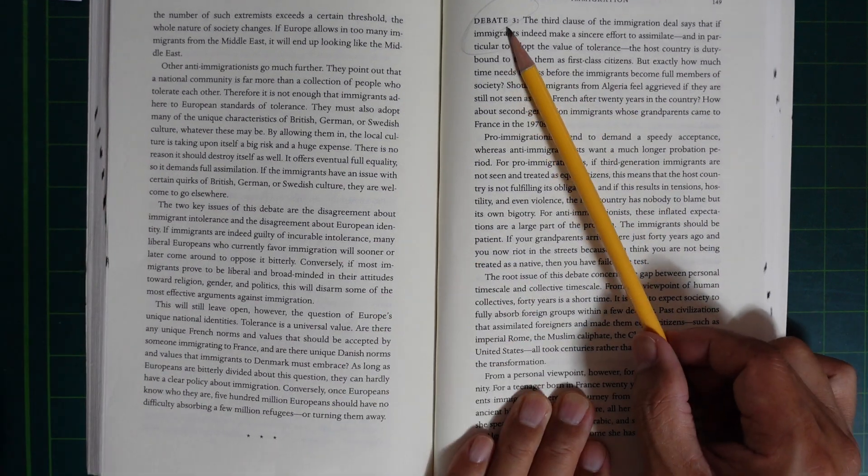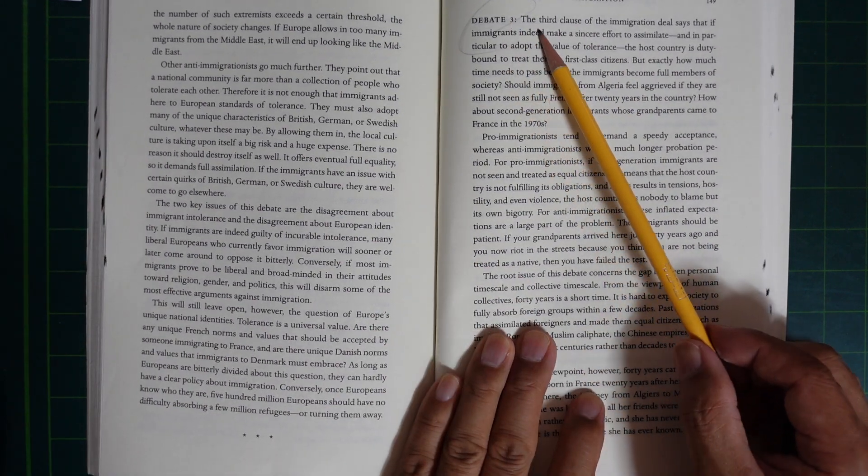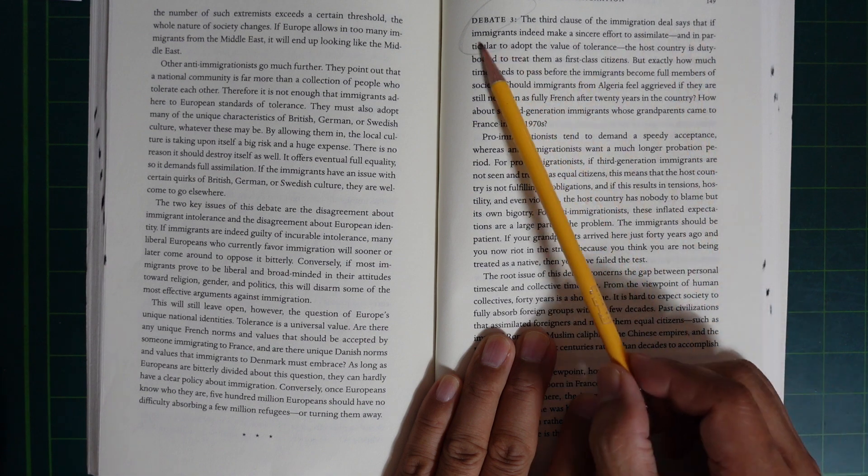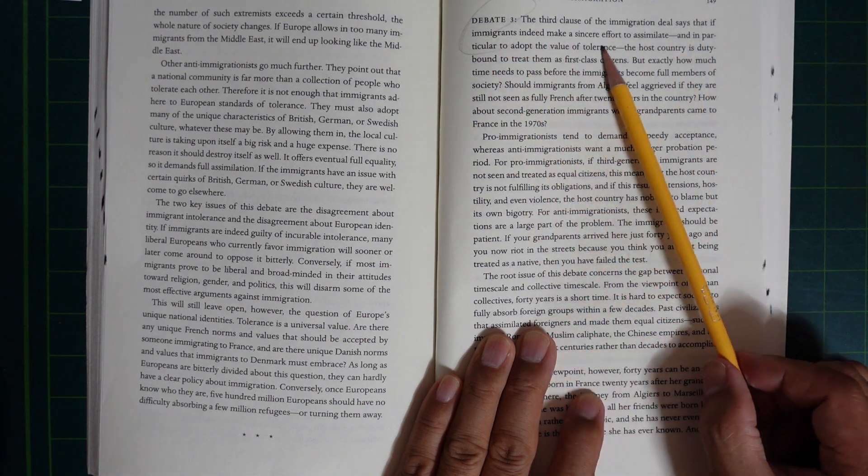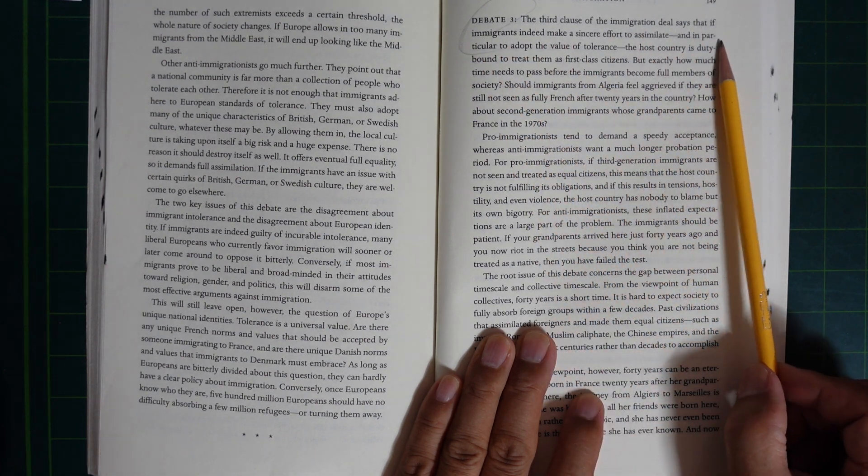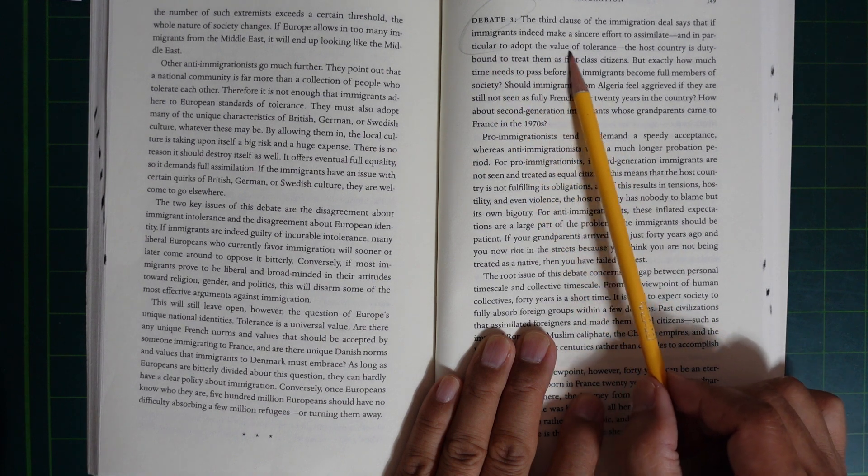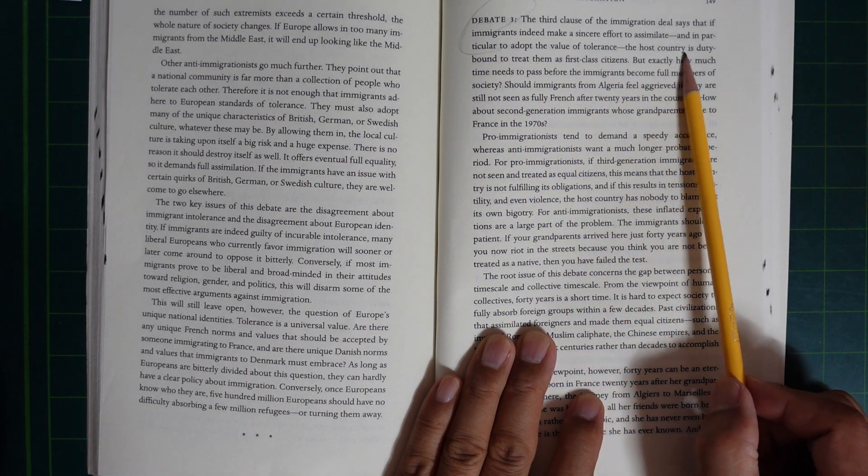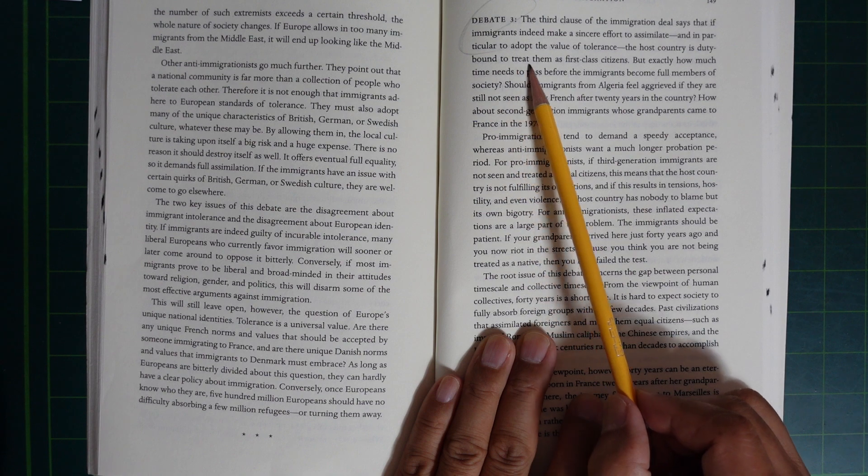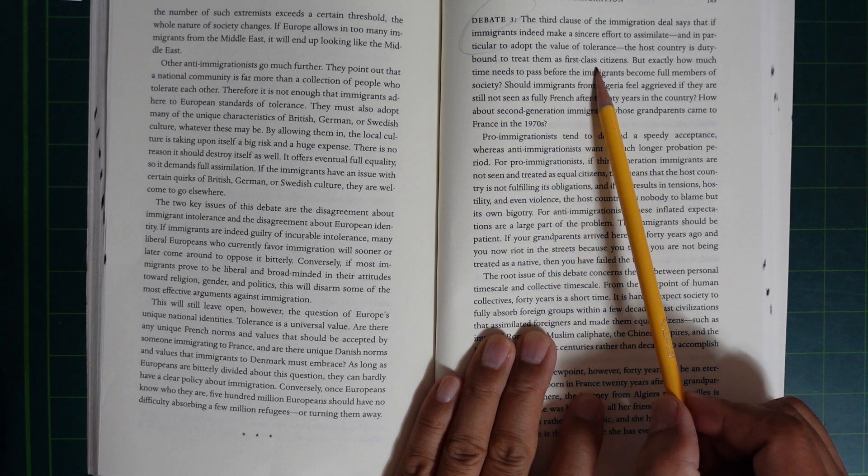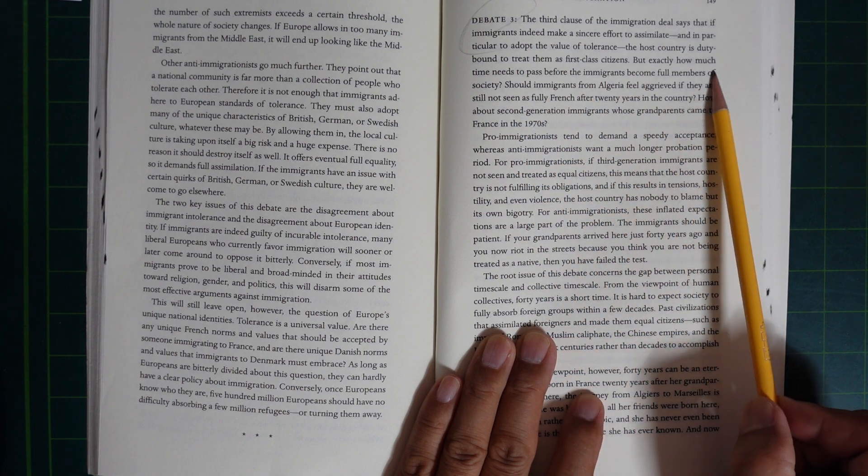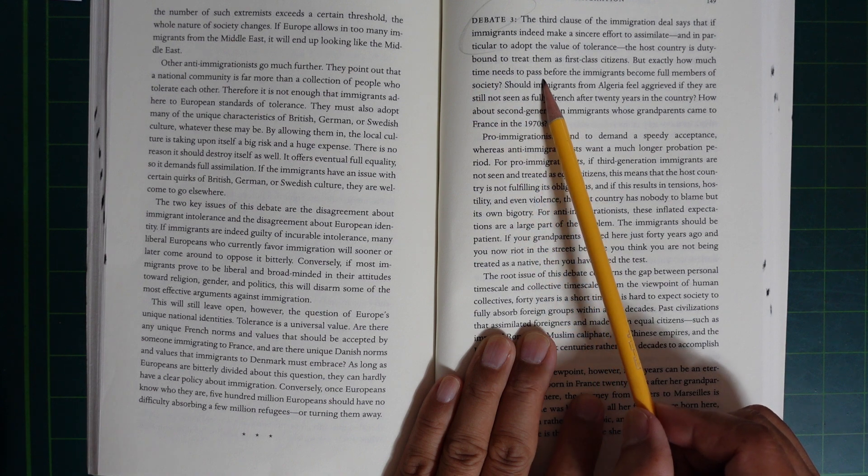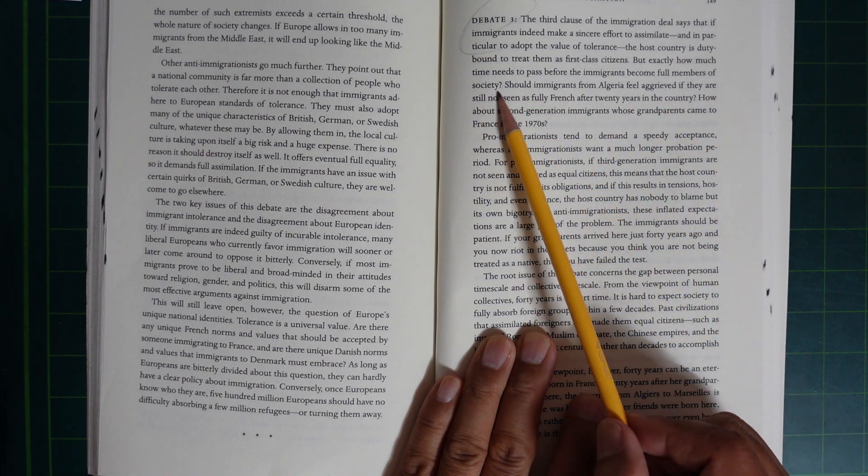Debate 3. The third clause of the immigration deal says that if immigrants indeed make a sincere effort to assimilate, and in particular to adopt the values of tolerance, the host country is duty-bound to treat them as first-class citizens. But exactly how much time needs to pass for the immigrants to become full members of society?